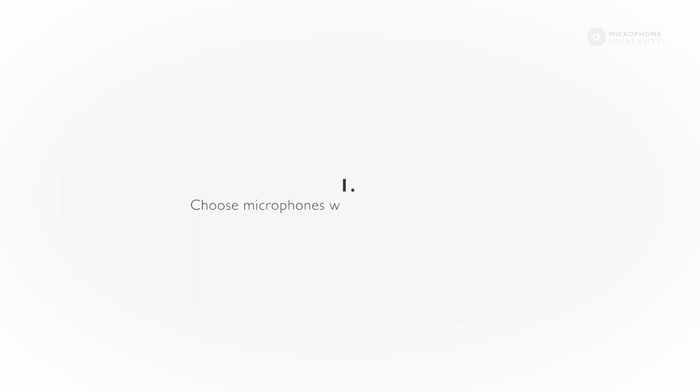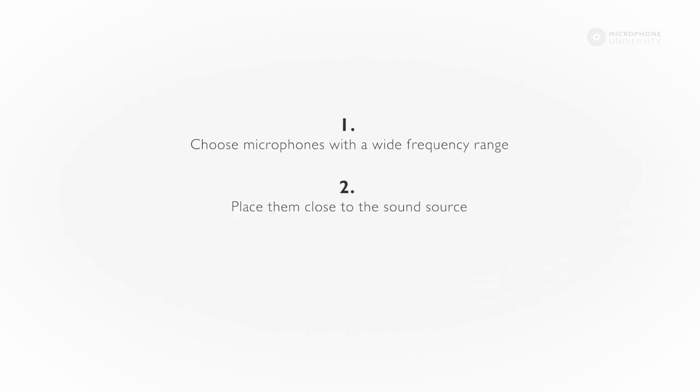The takeaway from this tutorial should be that in order to maintain high speech intelligibility, you have to preserve the consonants. And in order to preserve the consonants, there are three easy steps: choose microphones with a wide frequency range, place it close to the sound source, and avoid as many reflections and as much background noise as possible.